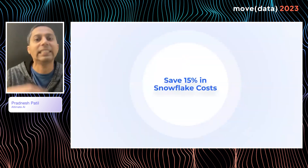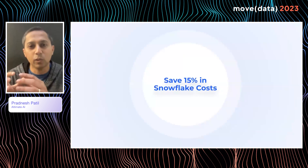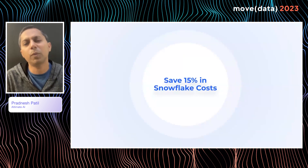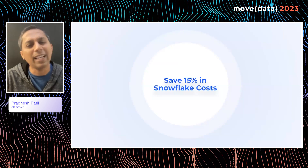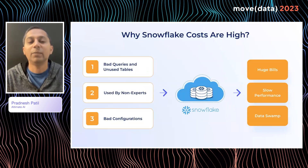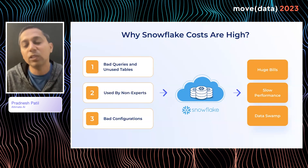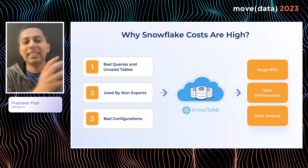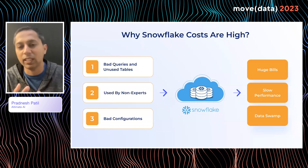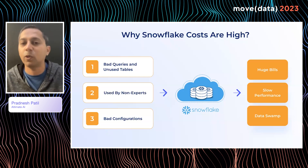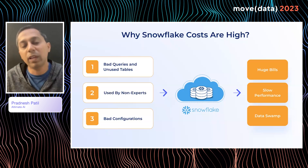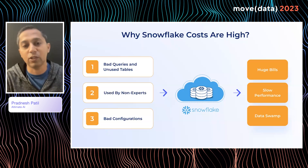Now let's look at the second area: saving money on Snowflake costs. Why is Snowflake so expensive? It's because people misuse it — there are bad queries written or unused tables. There are companies that run millions of queries within a week or have thousands of unused tables, and a lot of times business teams get blamed because they're non-experts. This is where AI agents can come in and help automate and monitor things automatically.